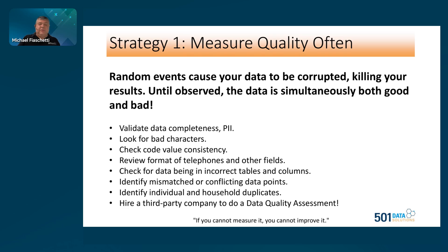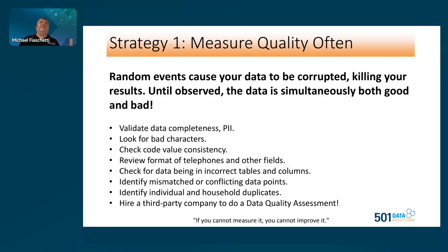We see carriage returns, line feeds, and scientific formulas that get corrupted when you open Excel and save — no one catches it, and you import it. Now you have something completely unusable in an address or email field. Check whether data is in the wrong columns — telephones in email fields, emails in address line one. All these things make records unusable. They were probably good at one point, but some upload or integration overwrote that, and now you can't communicate. When I say we're looking to re-engage with donors, it's by measuring and then fixing this data.